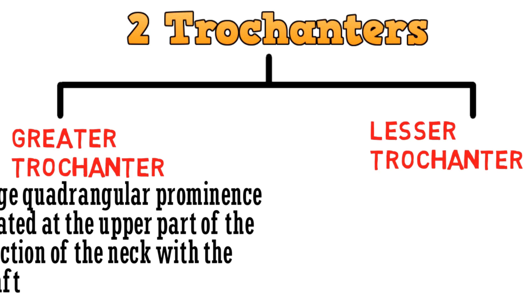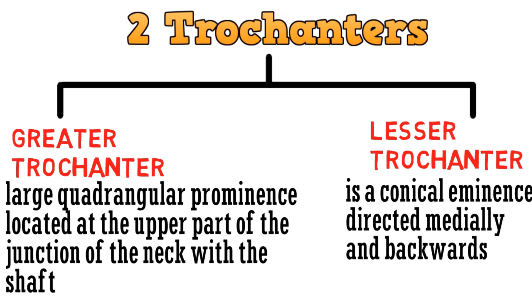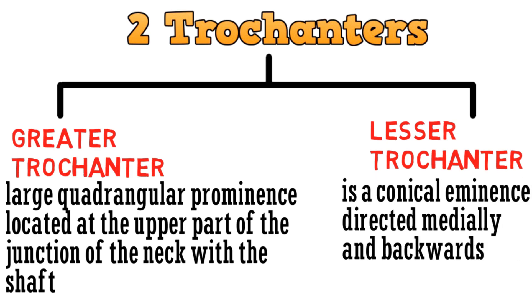The greater trochanter is a large quadrangular prominence located at the upper part of the junction of the neck with the shaft. The lesser trochanter is a conical eminence directed medially and backwards.